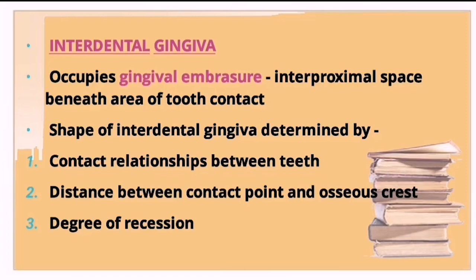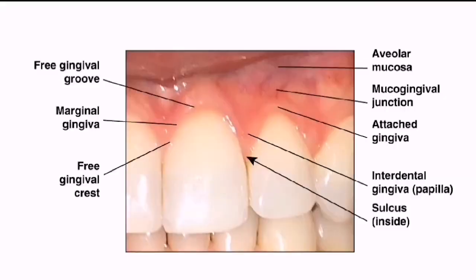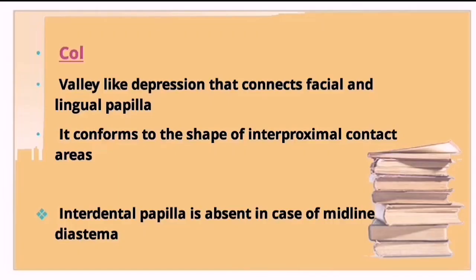Interdental gingiva occupies the gingival embrasure — the interproximal spaces beneath the area of tooth contact. Its shape is determined by the contact relationship between the teeth, the distance between the contact point and the osseous crest, and the degree of recession. In the picture, the embrasure region represents the interdental gingiva, distinct from the marginal and attached gingiva.